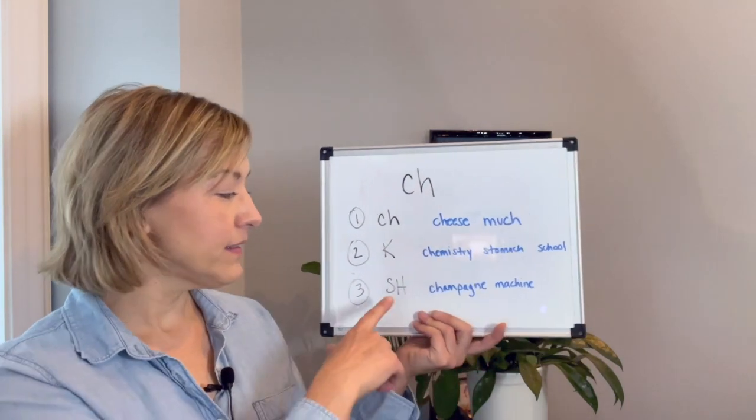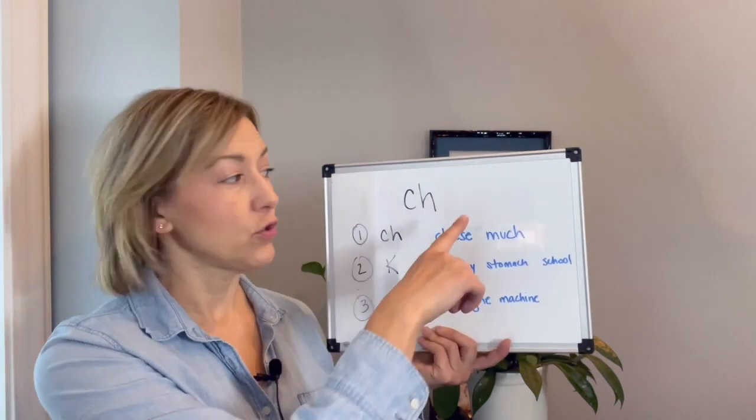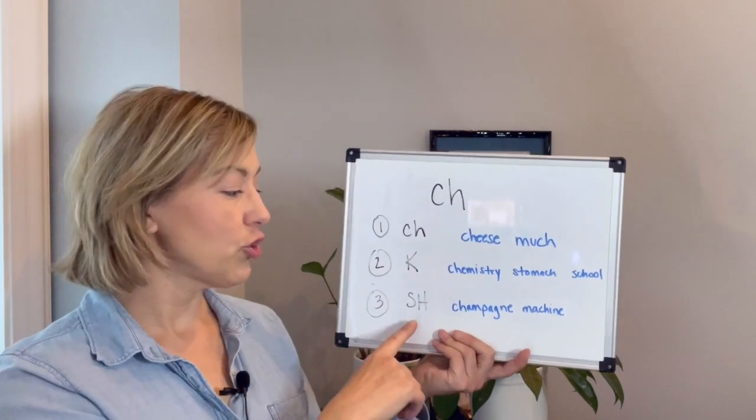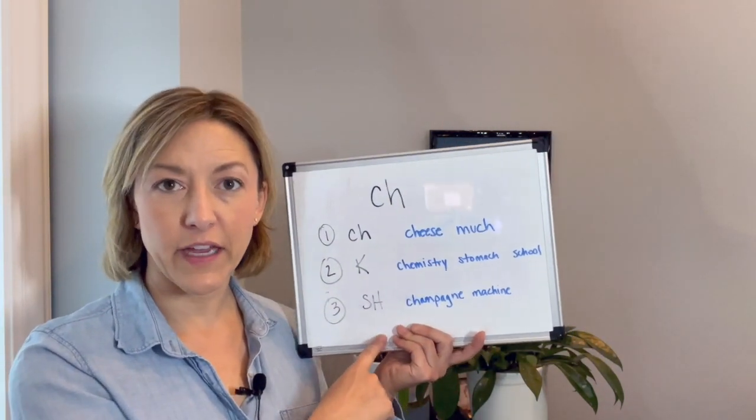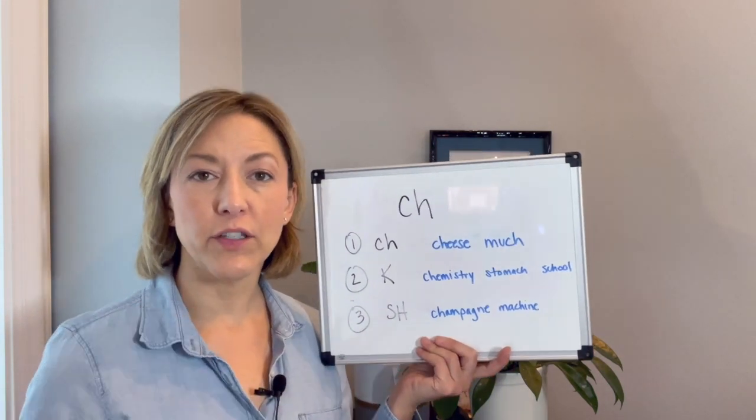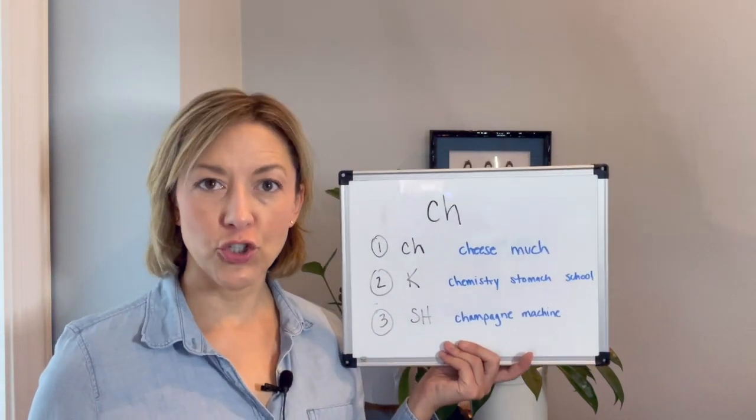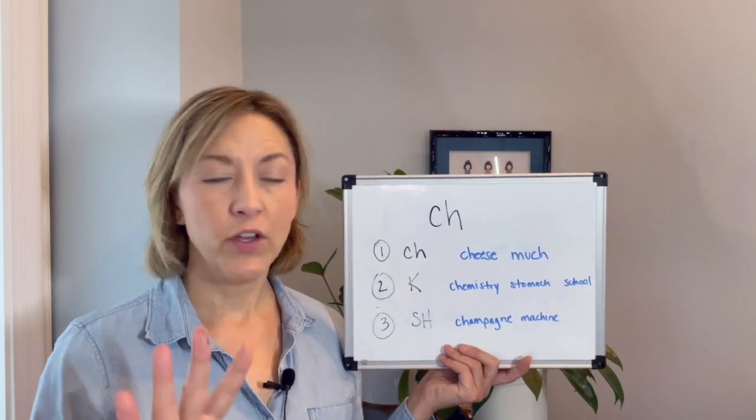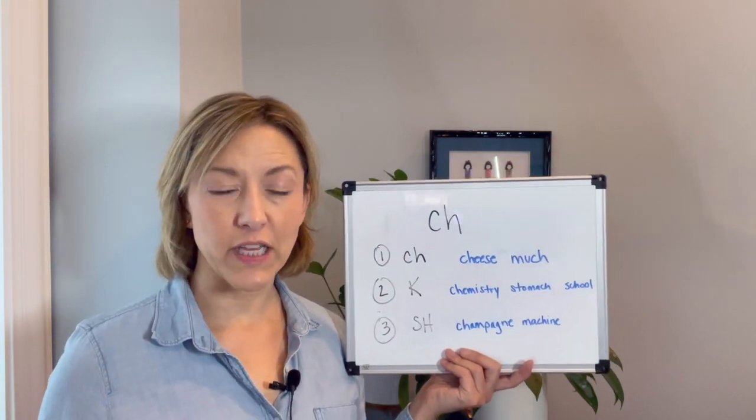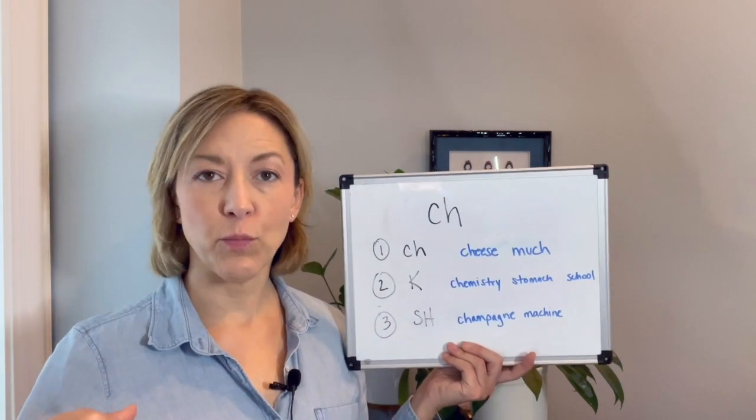And then last we have these two letters CH pronounced as the SH sound. Again typically two letters accounting for one sound. For this sound your lips are rounded, your tongue is not touching your teeth, and the air just continues to move out.